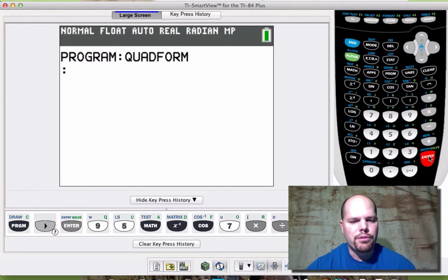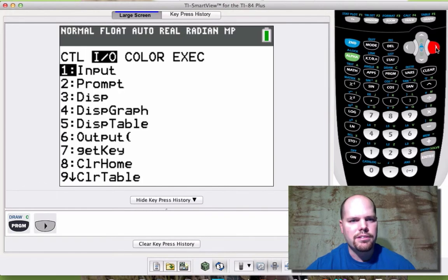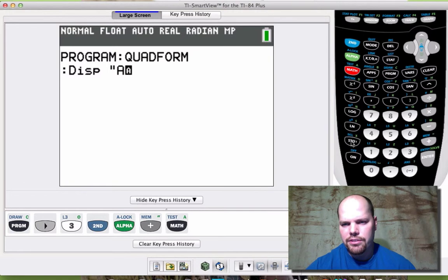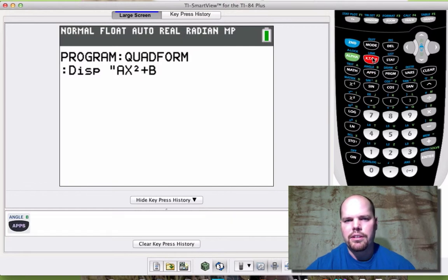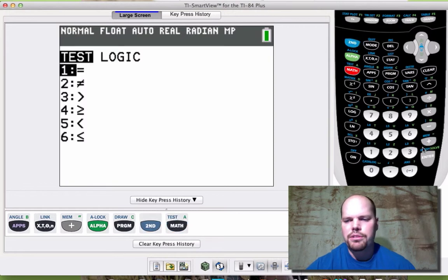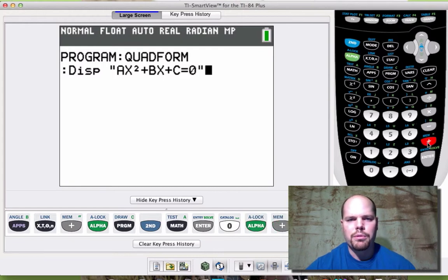First thing I want to do is remind you when you run this program that you need to have it equal to zero, your quadratic equation equal to zero. So let's display. Press program, let's display some text. Scroll over to the input outputs, and we're going to go option three to display. Now I need to get some quotes here. Let's display AX² + BX + C = 0. That's what's going to pop up when we run the quadratic formula first. That will give you a reminder, get your equation equal to zero before you pick out your A, B, and C values.